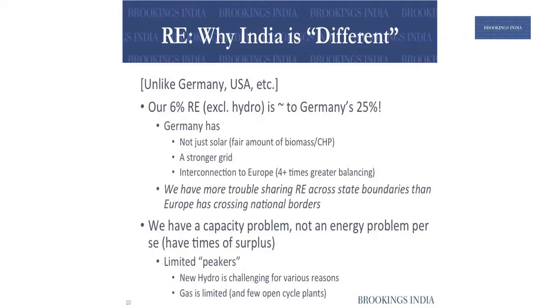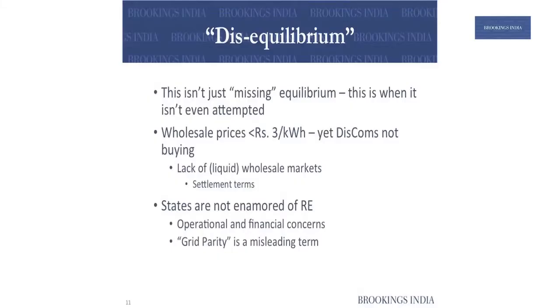If we talk about renewables in the future, India is very different from other countries because we do not have the same strength of grid. If you look at Germany, which is at 25 percent RE on an energy basis, we are today at 6 percent. Germany interconnects to Europe, which is four times larger than India — so our 6 percent today is roughly the same as Germany at 25 percent. Fundamentally, we are at a point where we still have a capacity challenge to address, not just an energy challenge. We are surplus at different times of the day but not all the time, and we have limited peakers. Today when the wholesale price in the power exchange is under 3 rupees a unit, DISCOMs are not buying.